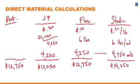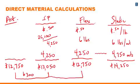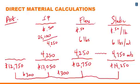The difference between the actual column and the standard price column is $300 — this is the price or spending variance, due to fluctuation between the actual price per unit of input and the standard price. The difference between the second and third columns is the efficiency variance, also $300, due to using a different number of inputs per output than planned. The difference between the third and fourth columns is the activity variance of $1,500, due to producing a different number of units than planned.